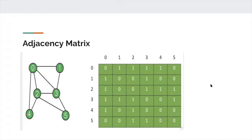There is also an edge between node 0 and node 2, node 3, and node 4. There is not an edge between node 0 and node 5. We can also see this in the graph on the left. Because there is a 0 for 5, there is no edge between 0 and 5.